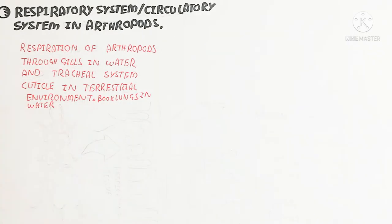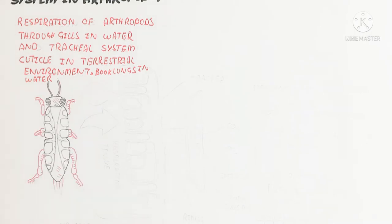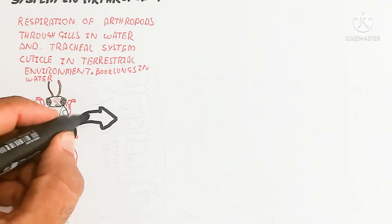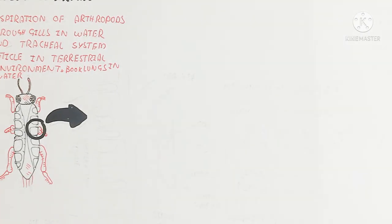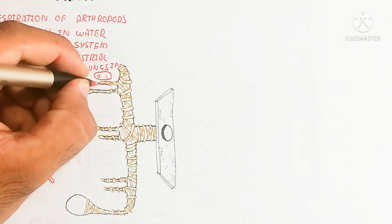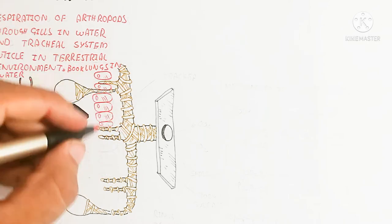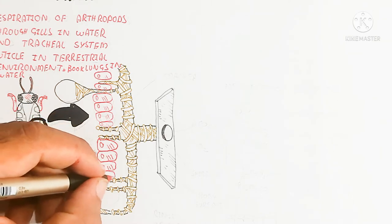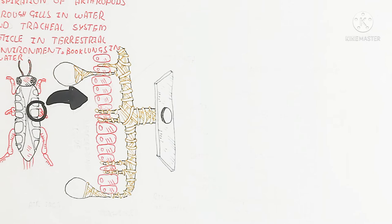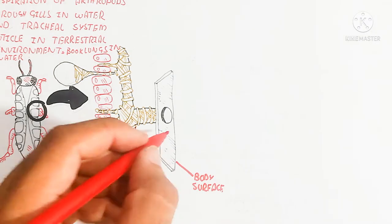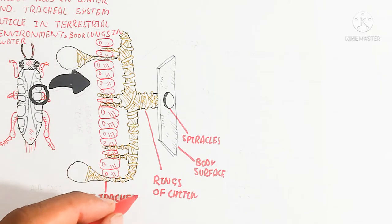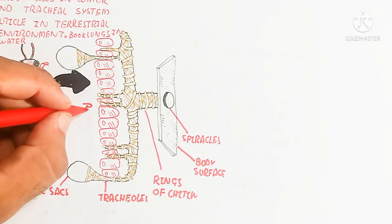Respiration in arthropods occurs through gills in water, a tracheal system and cuticle in terrestrial environments, and book lungs. Insects contain a tracheal system. The cuticle is the body surface, and at the spiracles — the openings — branches of the trachea convert into tracheoles. The ends of the tracheoles contain air sacs in some insects. The rings of chitin are made up of a polysaccharide and lipoprotein.